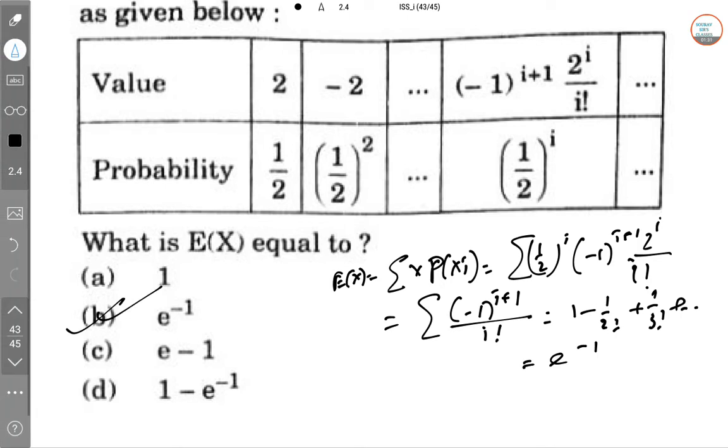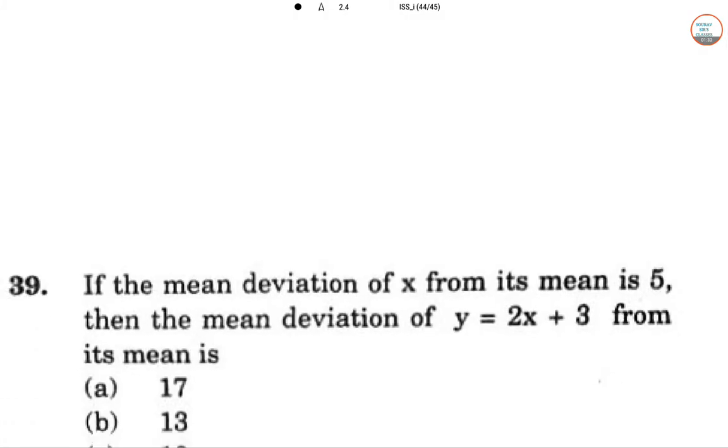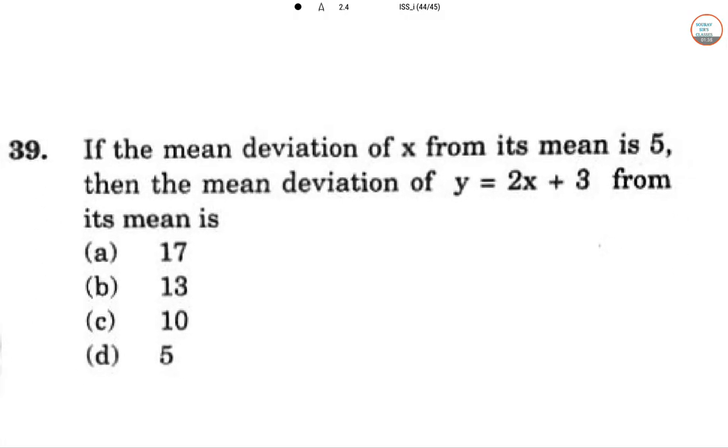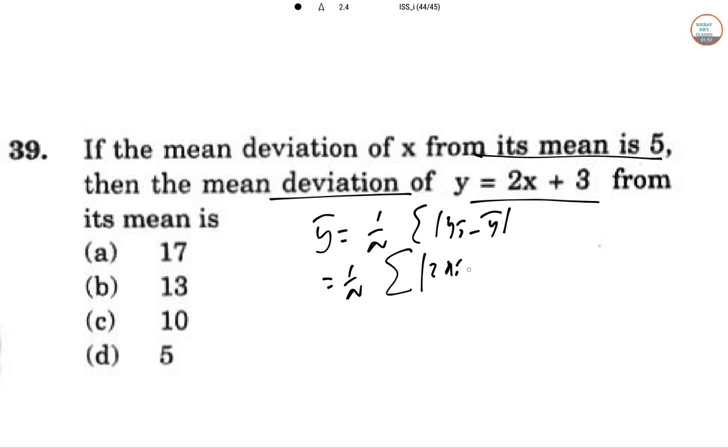Question 39: If the mean deviation of X from its mean is 5, then what is the mean deviation of Y equal to 2X plus 3? The common format is 1 by n summation of yi minus y bar. That equals 1 by n summation of 2xi plus 3 minus 2x bar plus 3.